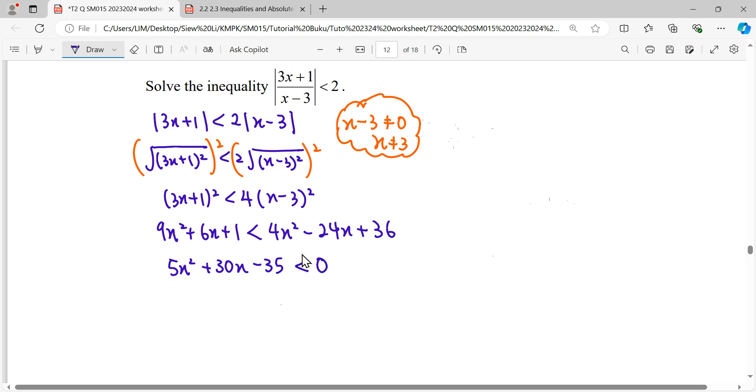And we can see the multiple of 5 here, we can simplify our quadratic by dividing by 5. Then we perform our factorization and draw the graph to find the region.